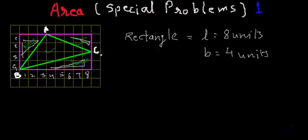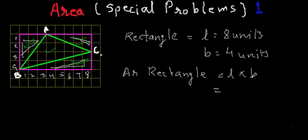So let's do that. What is the area of the rectangle? We know the area of a rectangle is length multiplied by breadth, which in this case is 8 multiplied by 4, which is 32 square units. Now what we have to do is remove the areas of these triangles. I am calling this triangle number 1, this one triangle number 2, and this one triangle number 3.